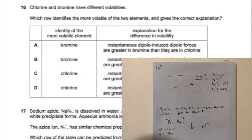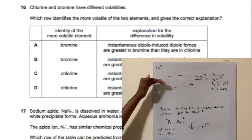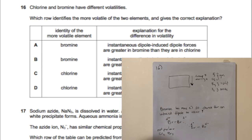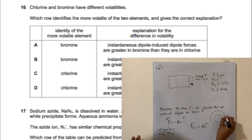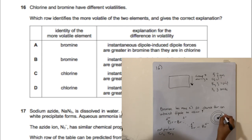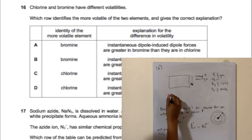The London dispersion forces between bromine molecules are stronger than between chlorine molecules because of more electrons and a larger atomic radius. The electrons in bromine are further from the nucleus, making them more polarizable, creating a stronger induced dipole — so bromine is less volatile. The answer is C.